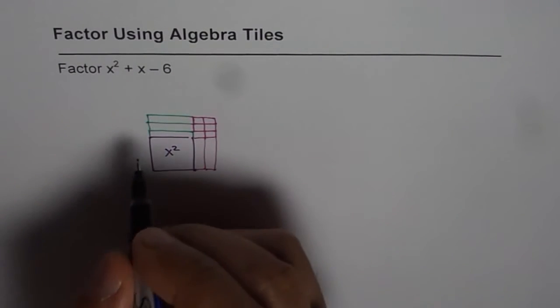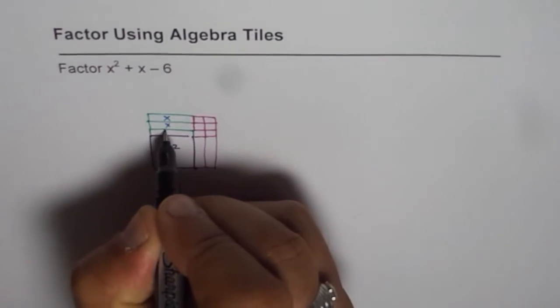Now the rectangle is complete and the dimensions of the rectangle will give us the factored form of the trinomial. This is x here, so this is x for us. These are plus x.